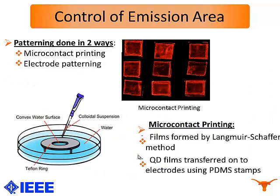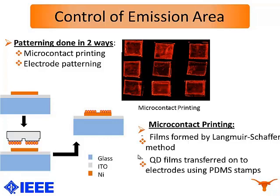What we want to do is control the area of emission of our quantum dots because we want to create multi-colored quantum dots on a single substrate, so we have to control the emission layer. We do patterning in two ways. One is microcontact printing of the quantum dot sensors. For microcontact printing of the quantum dots, we use an Langmuir-Blodgett type method in which we use a Teflon ring in water to create a convex surface of water. On this convex surface we pipette a colloidal solution of quantum dots in hexane as a solvent. The hexane being volatile evaporates and leaves behind a monolayer film of the quantum dots, which can then be picked up using a PDMS stamp and transferred onto the nickel oxide layer, which is the hole transporting layer.